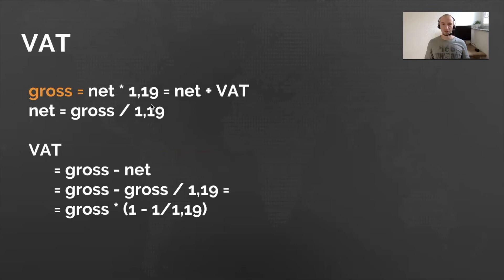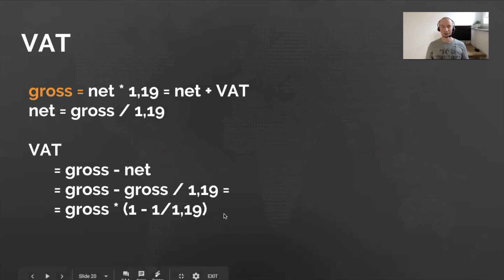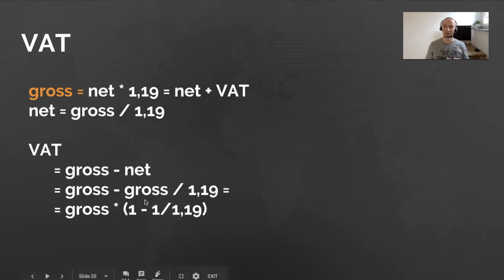From this, we can derive that net = gross ÷ 1.19 (or ÷ 1.20 if your VAT rate is 20%). Then we can calculate VAT as gross minus net, and since net = gross ÷ 1.19, we can substitute and factor out gross, ending up with a single factor. If your VAT is 19% or 20%, this factor is roughly 16%. So if you're presented with a gross sum, the VAT is not 19% or 20% of that sum — it's closer to 16%.